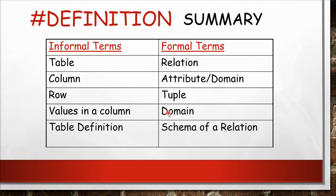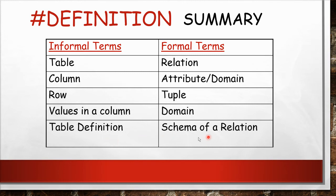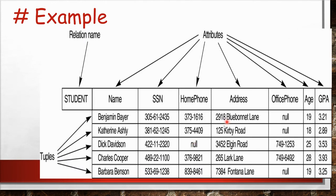The formal terms are: a table is called a relation, columns are called attributes, rows are called tuples or records, a value in a particular column is called a domain, and the table definition is called the schema of a relation. We can check the schema of a relation using the DESC command: DESC followed by the table name.